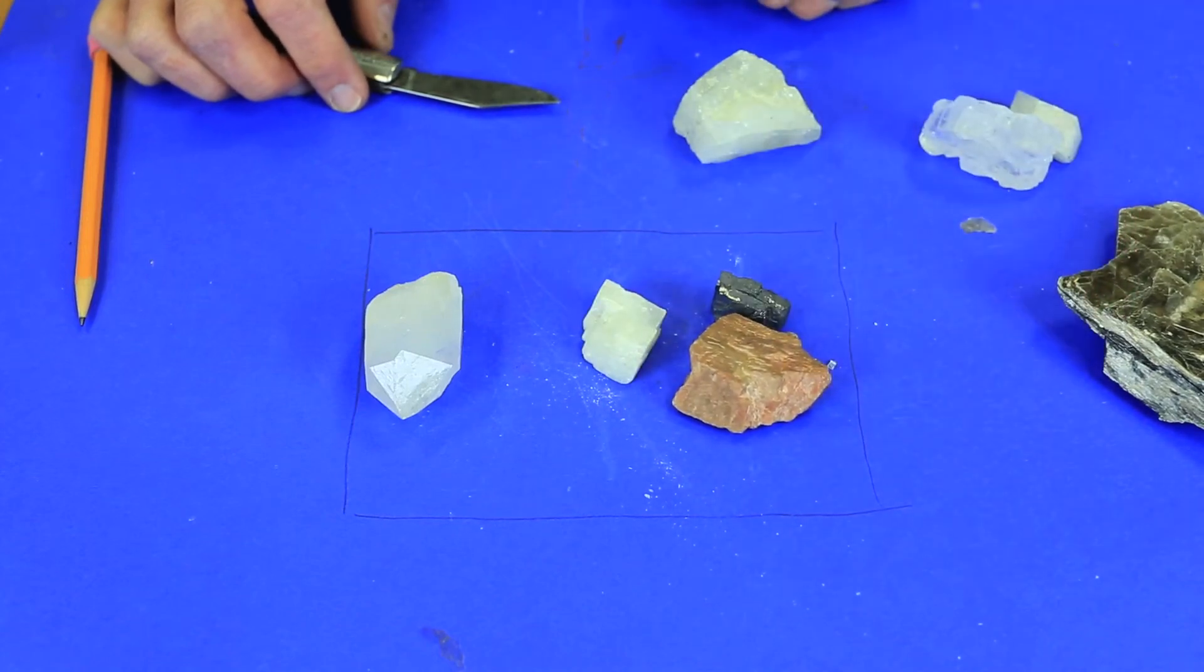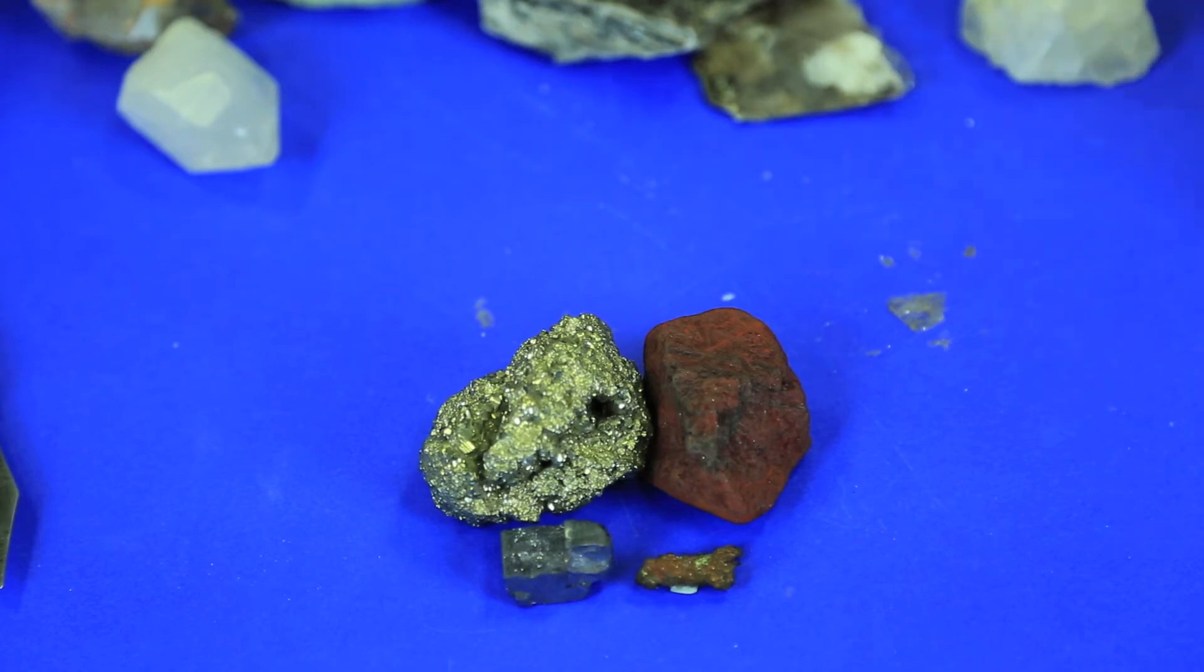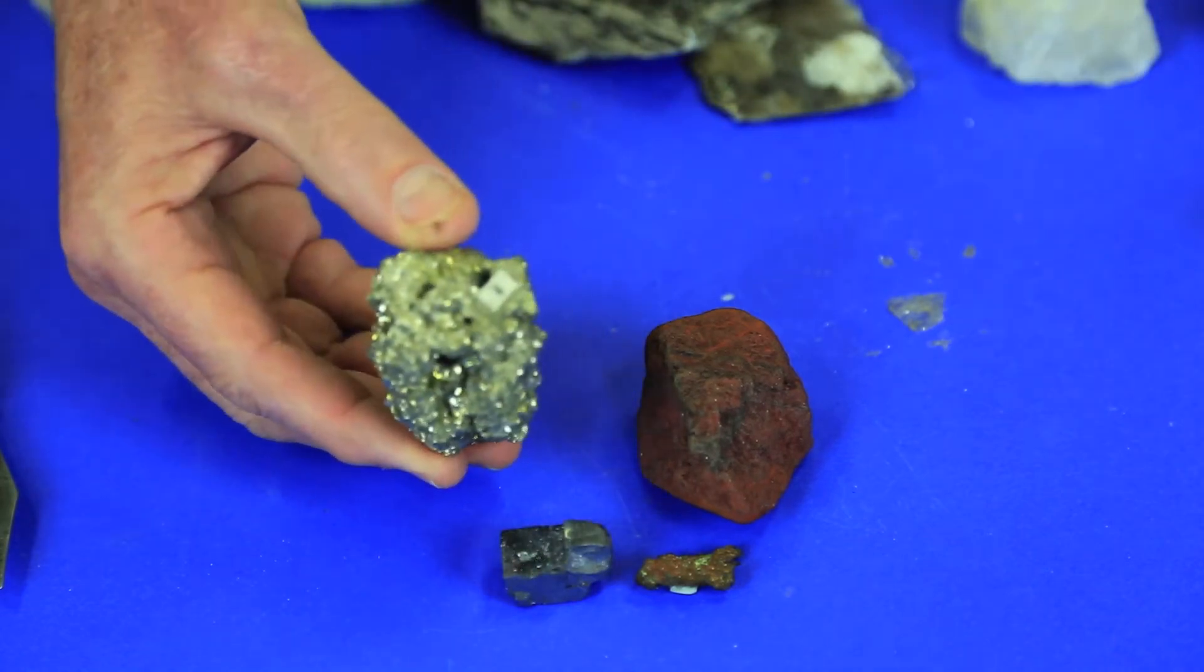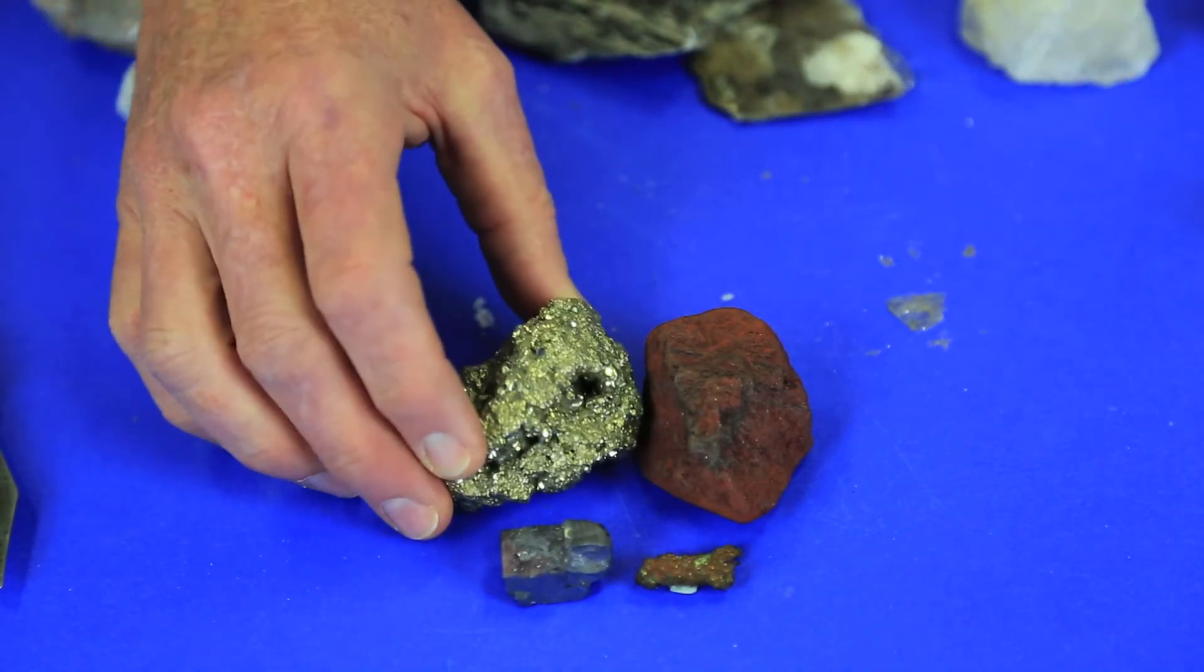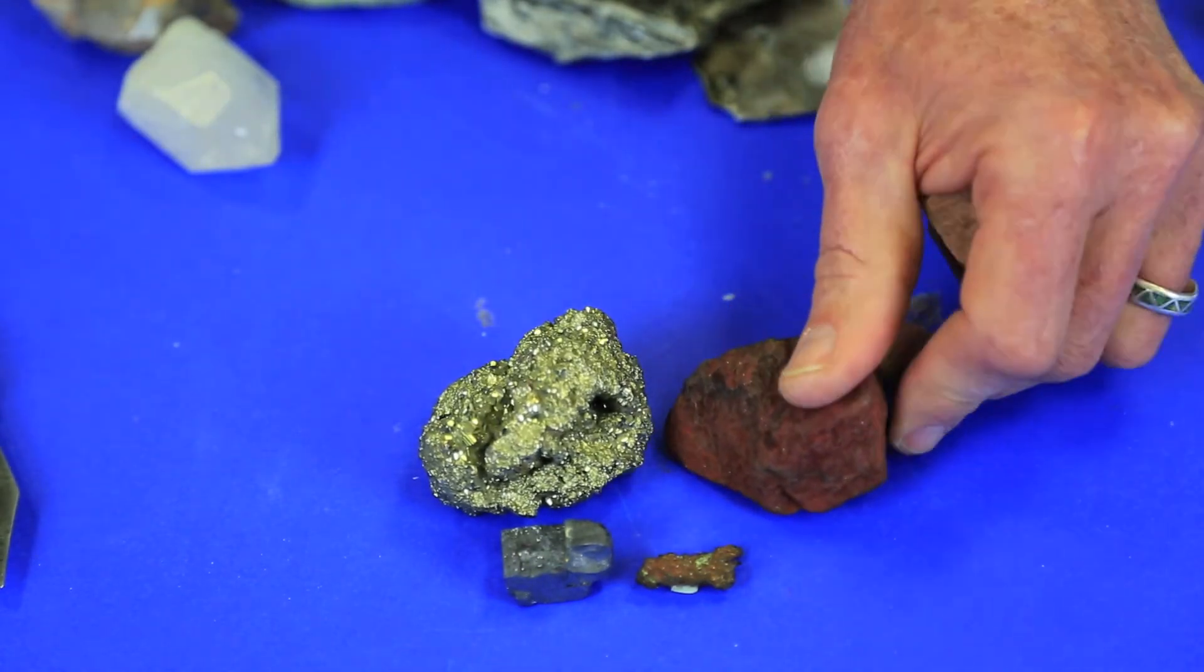The third property that we'll consider is a property of luster. This is the appearance of a mineral in reflected light. We're going to divide our minerals into two basic groups: those that have a metallic luster or submetallic luster and those that have a non-metallic luster. Now the metallic luster is quite easy to recognize. It looks like metal. It's bright and shiny and that's because it has metallic atoms in it. It may also have a high specific gravity so it feels quite heavy in your hand.